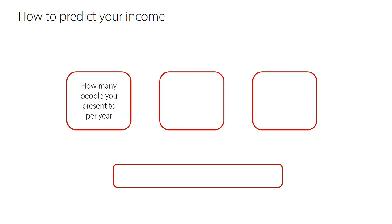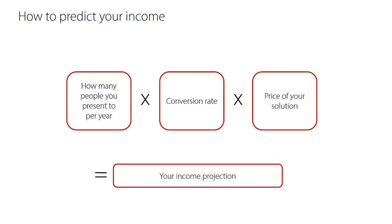The number of people you present to every year, multiplied by your conversion rate, multiplied by the price of your program, your product, your service — which I call your solution. Once you can plug those numbers into this equation, you'll be able to know your income projection. Most people know the price of their product or service, and if you've been doing presentations, seminars, webinars, or workshops, you might already have an idea of your conversion rate.